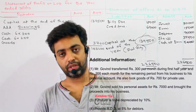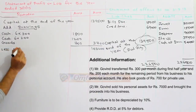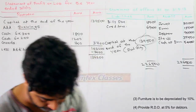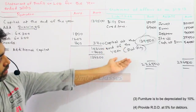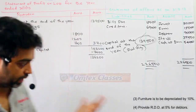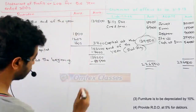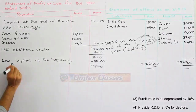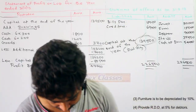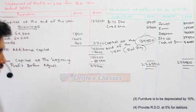He sold his private property and brought the money into the business — this is capital coming in from outside. Then from this we will minus the capital at the beginning of the year, which was $88,500. This gives us our profit before adjustments. Now here expenses and losses are given — depreciation and RDD — so less expenses and losses.